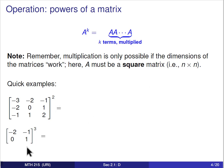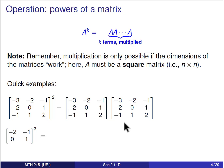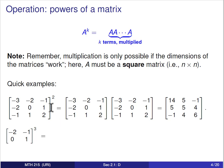In order for matrix powers to make sense, the number of columns of A has to equal the number of rows of A, which means A has to be a square matrix. If you have a square matrix, you can raise it to any positive power. For instance, squaring a matrix means multiplying it by itself, and we end up with another 3×3 matrix. Notably, unlike squaring real numbers, squaring a matrix can still produce negative entries.